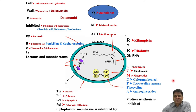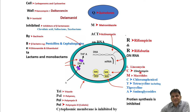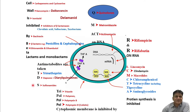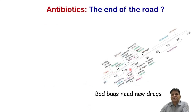Chloramphenicol was earlier used for typhoid fever but may lead to bone marrow suppression, so it is rarely used now. Macrolides include erythromycin and azithromycin, which was widely used during the COVID epidemics. Clindamycin and lincomycin are also included. There are also antimetabolites — T for trimethoprim, a component of septrin or co-trimoxazole; D for dapsone, used for leprosy; newer additions are the diarylquinolines; and sulfonamides.